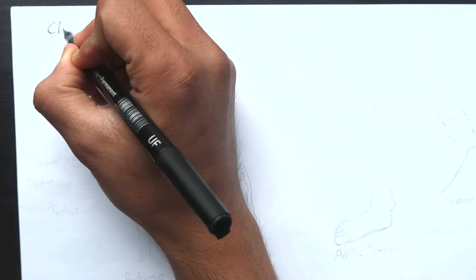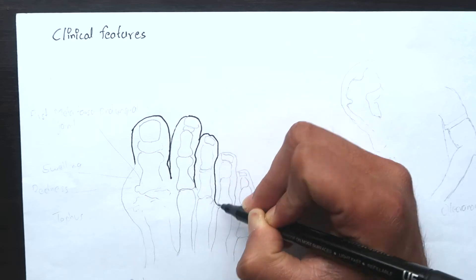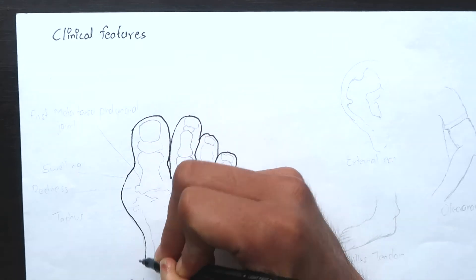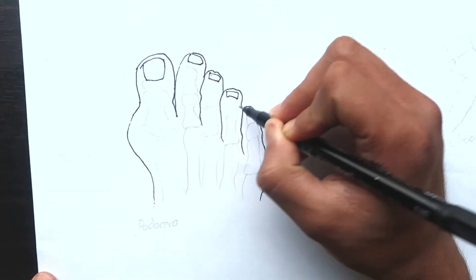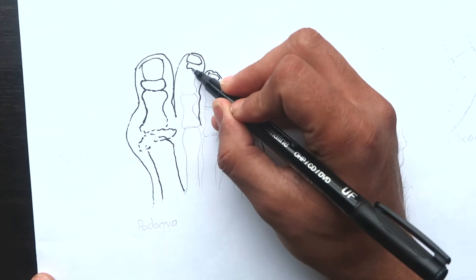Let's move on to the clinical features of gout. The classical presentation of gout is with an acute monoarthritis which affects the first metatarsophalangeal joint in over 50% of the cases called podagra.